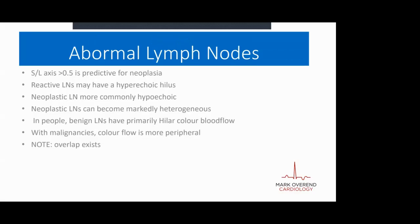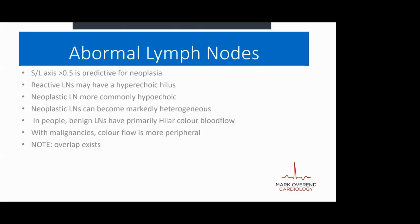Abnormal lymph nodes tend to be short and plump. The short to long axis ratio greater than 0.5 tends to be predictive for neoplasia. Looking at the difference between reactive and neoplastic lymph nodes: reactive lymph nodes tend to have a hyperechoic hilus, whereas neoplastic lymph nodes tend to be more commonly hypoechoic. Neoplastic lymph nodes also quite often become markedly heterogeneous compared to reactive lymph nodes.